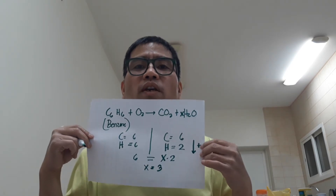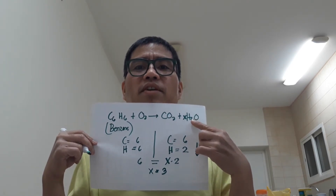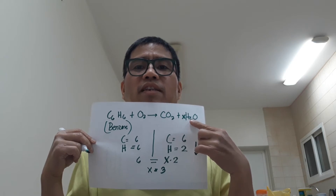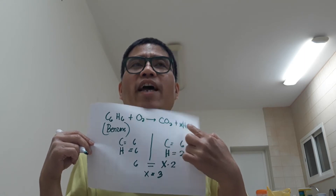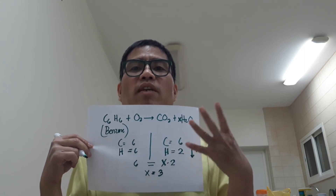We put x equals 3 here, as the number of moles of water beside the water molecule. The equation now becomes: C₆H₆ plus oxygen gas yields 6CO₂ plus 3H₂O. We also confirm 6 in front of CO₂ for carbon. Now let's recheck: carbon 6 on the left, carbon 6 on the right — balanced. Hydrogen 6 on the left, hydrogen 6 on the right — balanced. Now we go to oxygen.